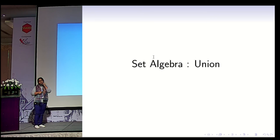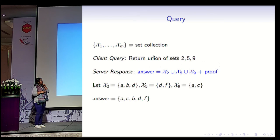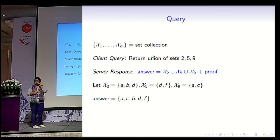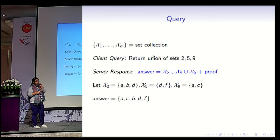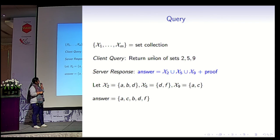Now I'm going to talk about union, one of the set algebraic operations, and show how we use the zero-knowledge accumulator technique to implement set union. For set union, the query is: you have a collection of sets chi1 to chiL, and the client queries the union of certain indices. For example, in a running example where the client asks for the union of sets 2, 5, and 9 — if chi2 = {a, b, d}, chi5 = {d, f}, and chi9 = {a, c} — then the answer should be {a, b, c, d, f}, and the server has to respond along with a proof.